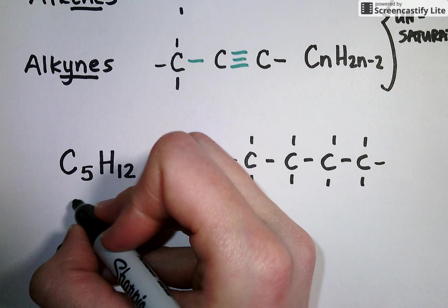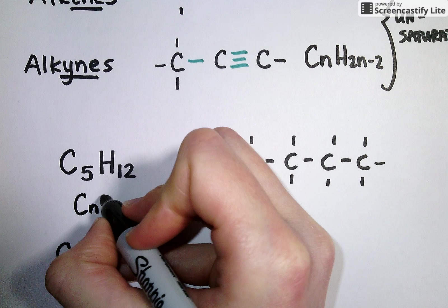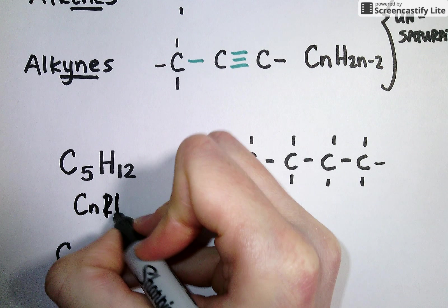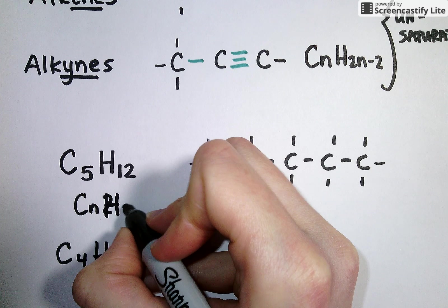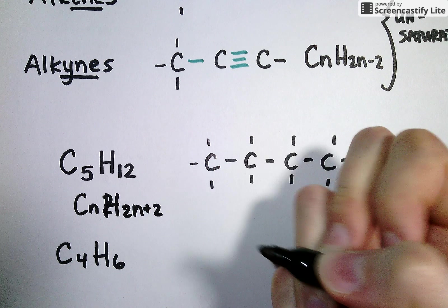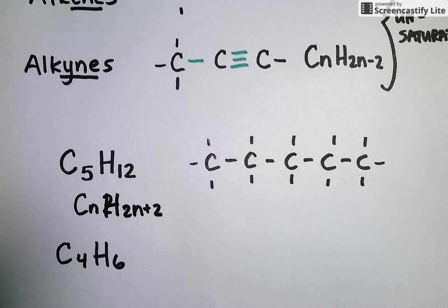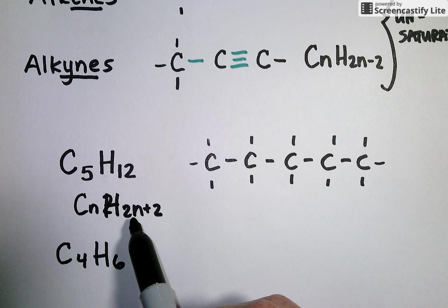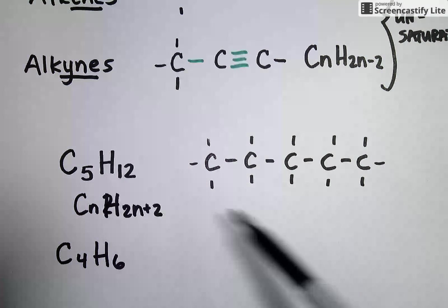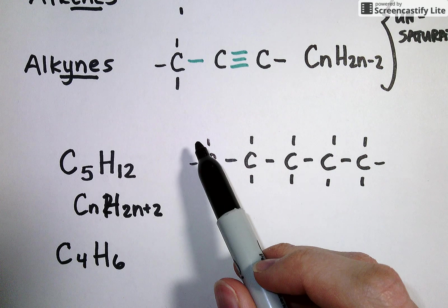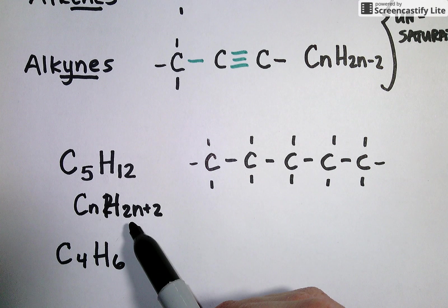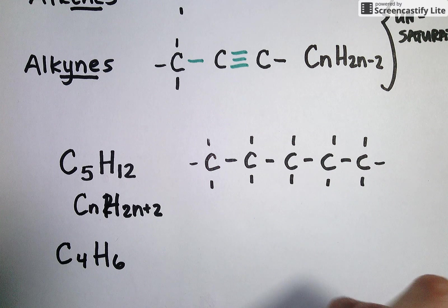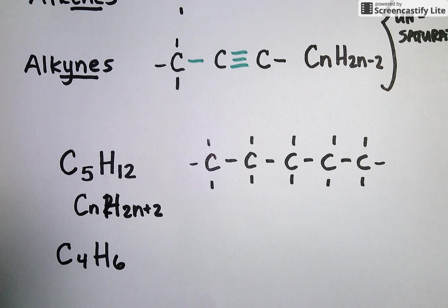And this makes sense because the alkanes general formula, like we said before, is CnH2n plus 2. And C5H12 fits that general formula. 5 times 2 is 10 plus 2 is 12. So without even drawing the molecule, you can go straight to this general formula and figure out if it's going to have double, single, or triple bonds.